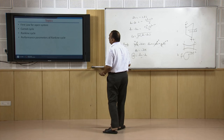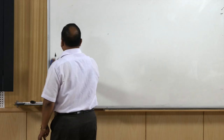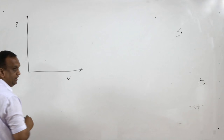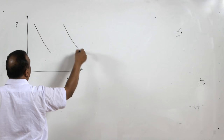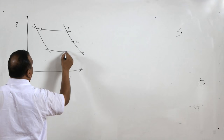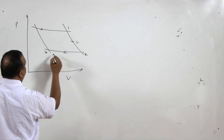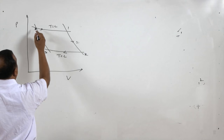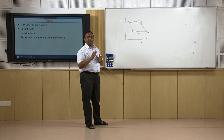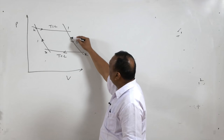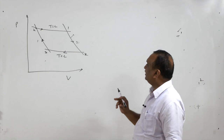After the first law for open systems, we take up the Carnot cycle. In a Carnot cycle there are four processes: two adiabatic processes and two constant temperature processes. On a temperature-entropy diagram, the Carnot cycle forms a rectangle — a cyclic process where alternative processes are constant temperature and constant entropy.